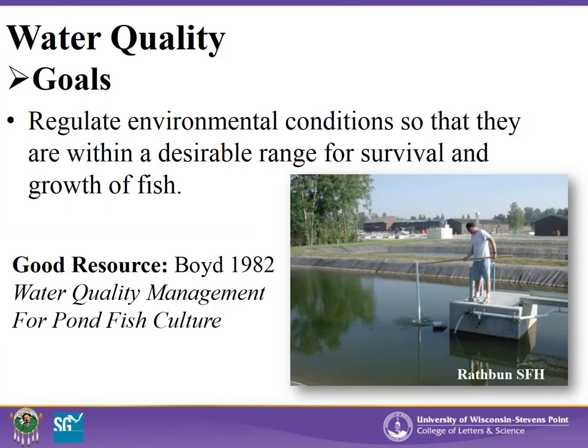In the book Water Quality Management for Pond Fish Culture, Claude Boyd states that the goals of water quality management are to regulate environmental conditions so they are within a desirable range for the survival and growth of fish. In waters used for fish culture, production is often increased by using fertilizer and/or commercial fish feed. Fish are also providing metabolic waste products such as carbon dioxide, ammonia, phosphorus, and others to the pond water, some of which are potentially toxic to fish in high enough doses.